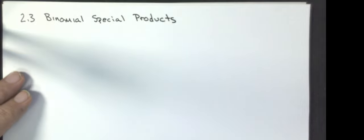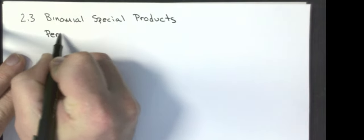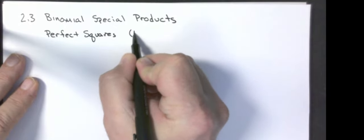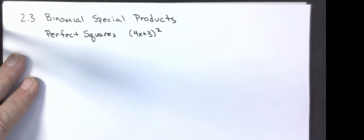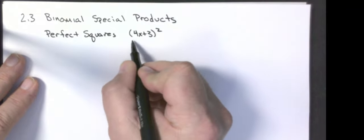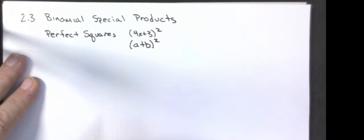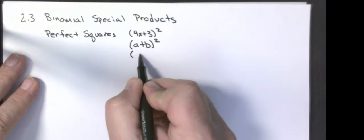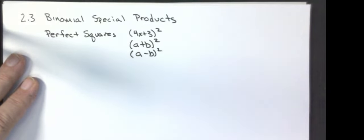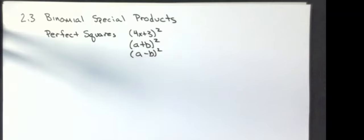Our next lesson is 2.3, about multiplying binomial special products. The first thing we're going to do is recall perfect squares — things that look like a binomial with two things added together or subtracted, all squared. We're going to learn how to do these quickly.